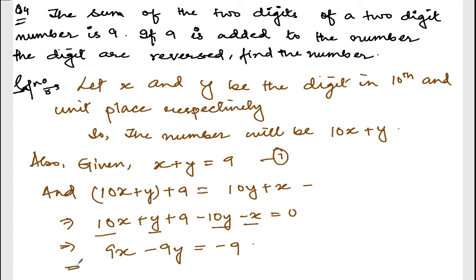If you divide by 9 on both sides, you are going to get x minus y is equal to minus 1. Or you can cancel 9 and this 9. Do whatever you want - divide both sides by 9, or take common 9. This is equation number 2.